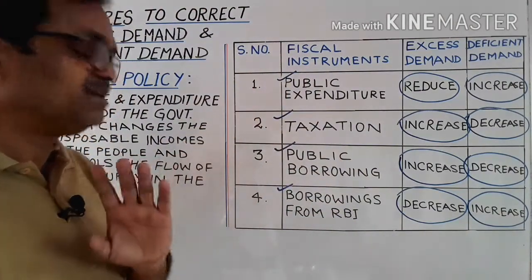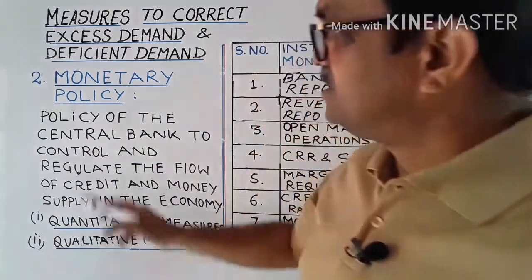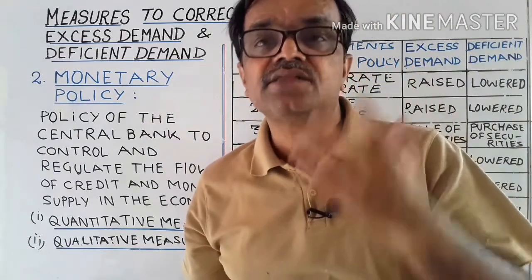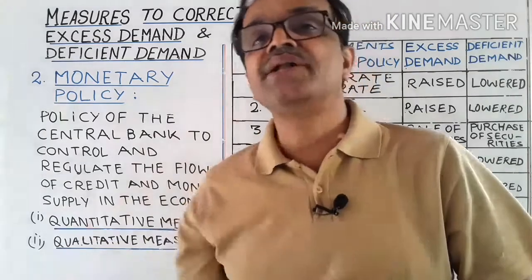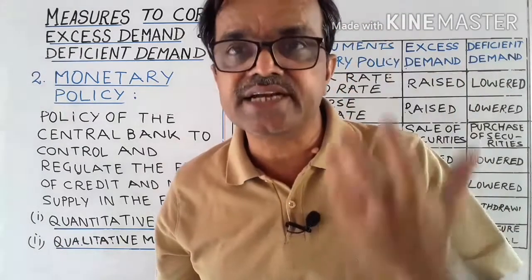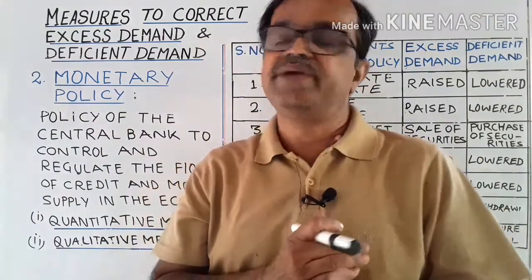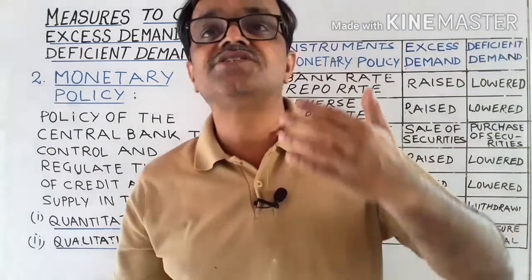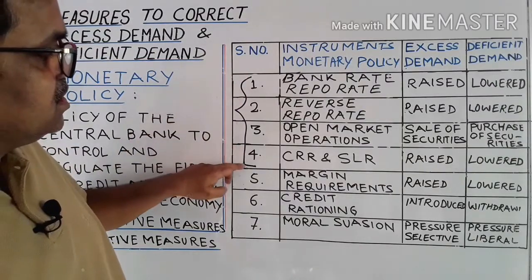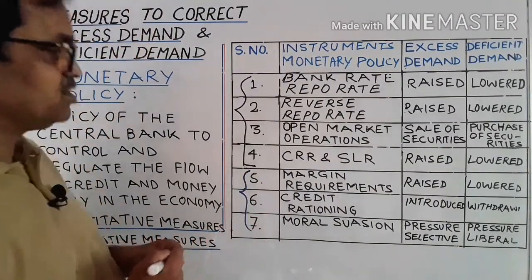So these are the four fiscal instruments. The second policy measure is monetary policy. Monetary policy is the policy of the central bank to control and regulate the flow of credit and money supply in the economy. There are two types of measures: quantitative measures, which check the quantity of credit and money supply, and qualitative measures, which regulate the flow of credit. The first four are quantitative and the last three are qualitative methods.